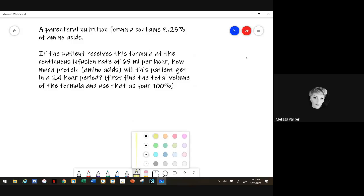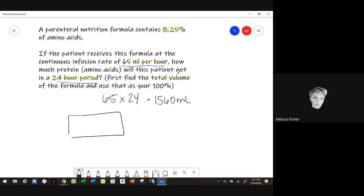Okay, so we have a parenteral nutrition where it has 8.25% of amino acids. If the patient receives this formula at a continuous rate of 65 ml per hour, how much protein or amino acids will the patient get in the 24 hour period. So first we have to find the total volume first. I have to do 65 times 24, right, because it's going to run 65 mls per hour, so I have to find out how much formula that is. So that's 1560 ml. So now that I have that, I can do my little box here.